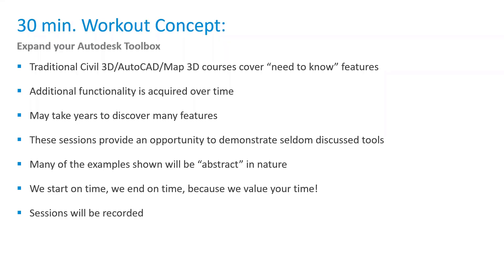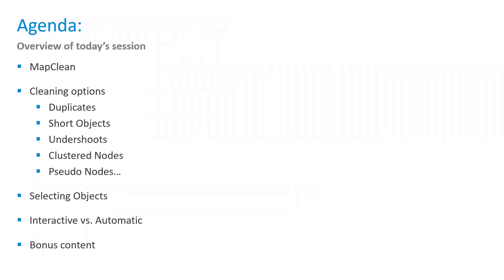These sessions will be recorded, and anybody who registered or attended will receive a copy of that recording. What we're going to look at today — the actual command is called map clean. It allows us to peruse our geometry and make adjustments where needed, typically in cases where there might be issues: deleting duplicates, short objects, dissolving pseudo nodes, undershoots, overshoots, dangling objects. The important thing is that we get geometry, especially in the civil space, from a lot of different locations depending on who created it. The geometry may have issues we'd like to correct before we start making design decisions and relying on it further down the line.